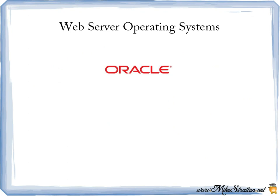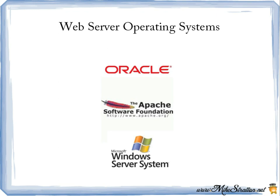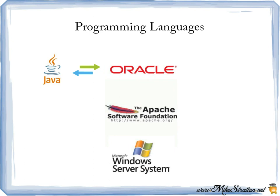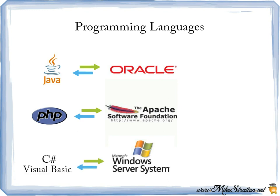Some common web server operating systems are Oracle, Apache, and Windows. Within each of these web servers, there are languages that are commonly used. For Oracle, it's Java. The common language used for Apache is PHP. Commonly used with Windows are Visual C Sharp and Visual Basic.